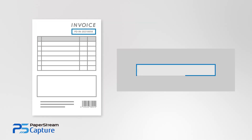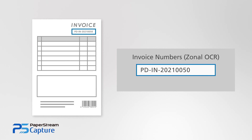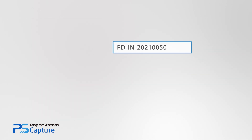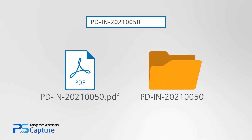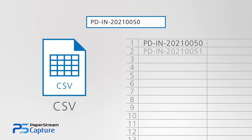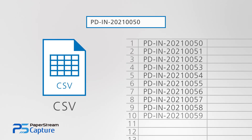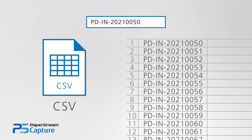Zone OCR detects text that is printed in designated areas of documents and utilizes the extracted line of text to automatically name folders and files, or export files in CSV.